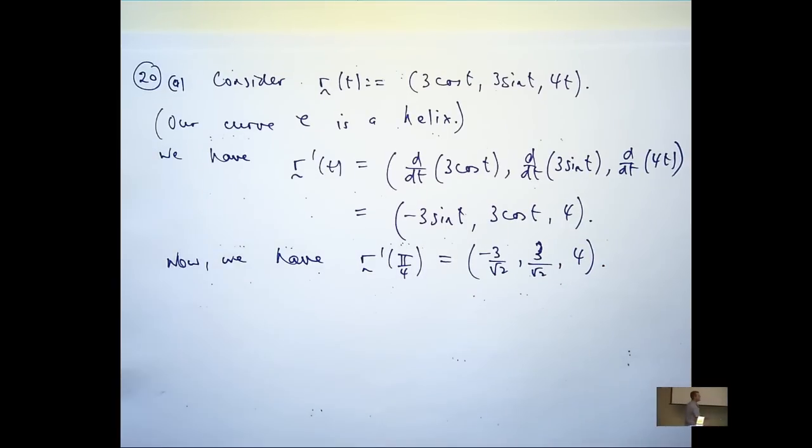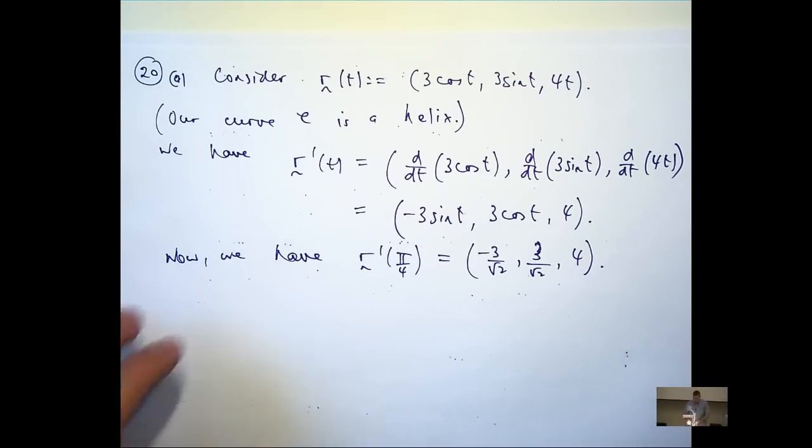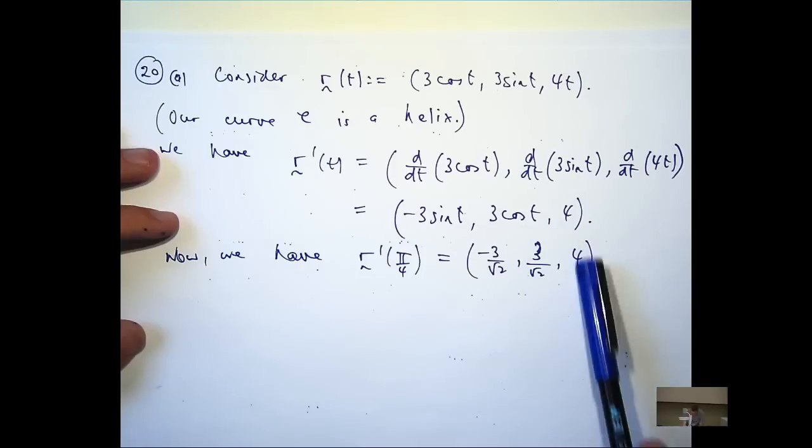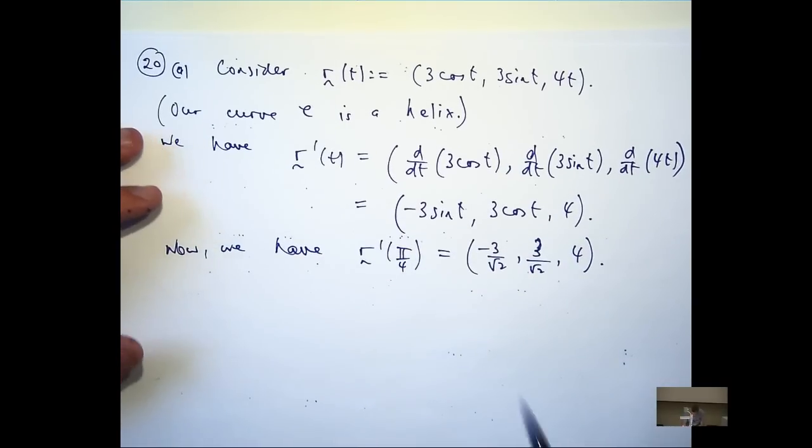So, that gives us a tangent vector to the helix. But we're asked for a unit tangent vector. So, all I really need to do is calculate the magnitude of this and divide by the magnitude.